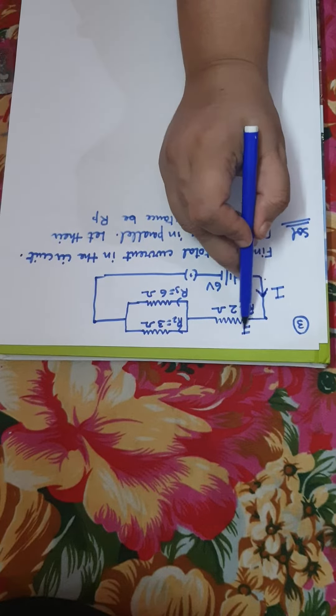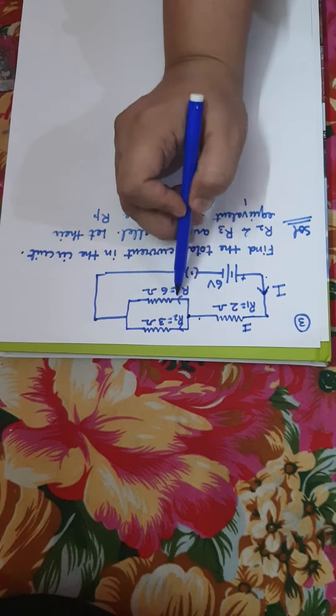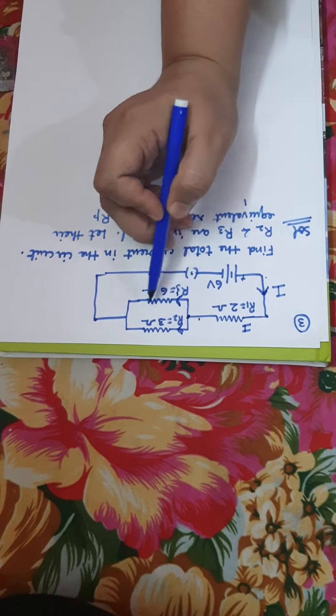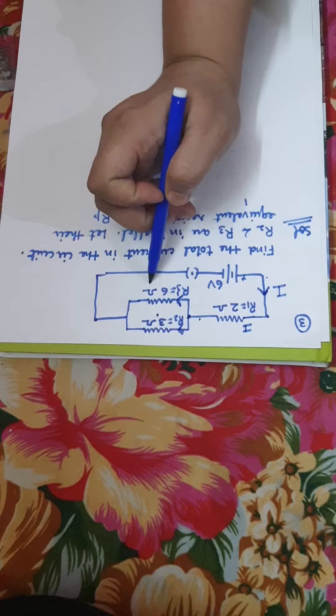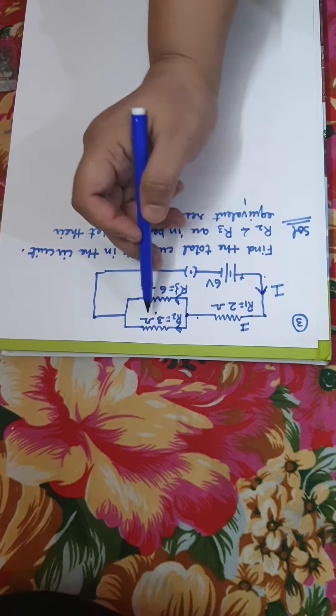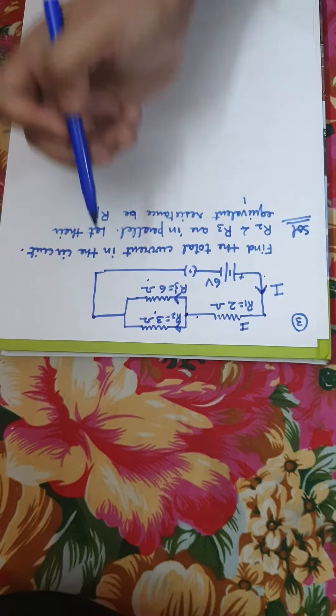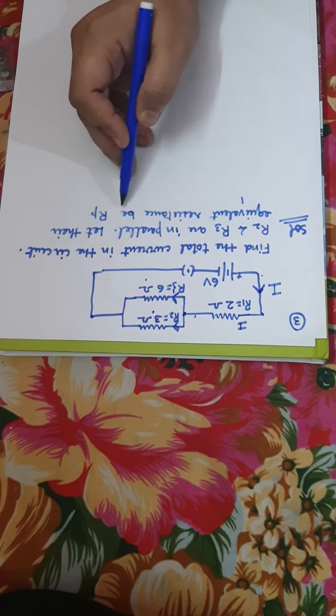So this current will pass through this and when the current reaches here, it will have two parts. Current will divide so we can say that this 3 ohm and 6 ohm are in parallel because the current is dividing. So first we will find the parallel combination of these two resistors. Let their parallel combination be Rp.